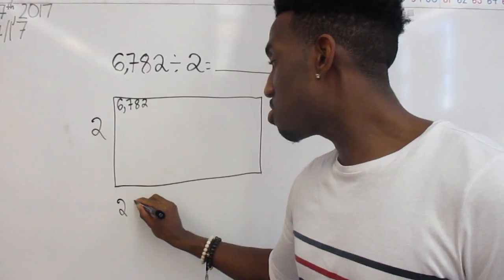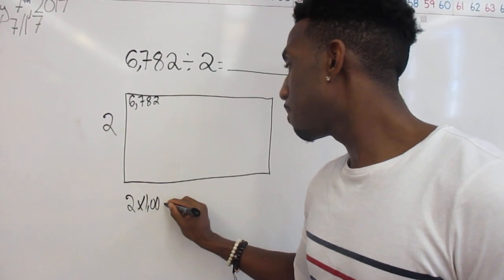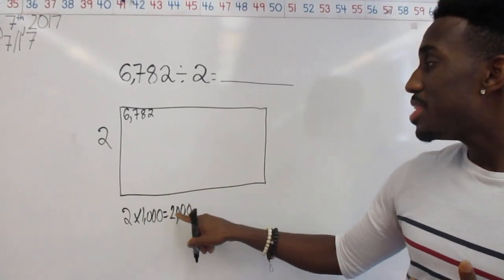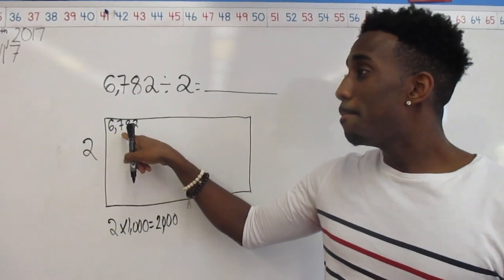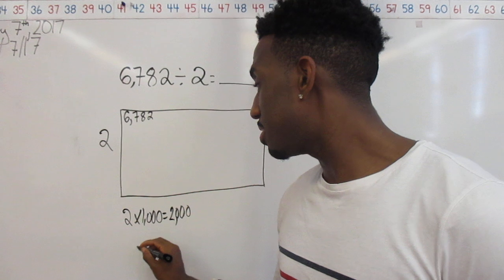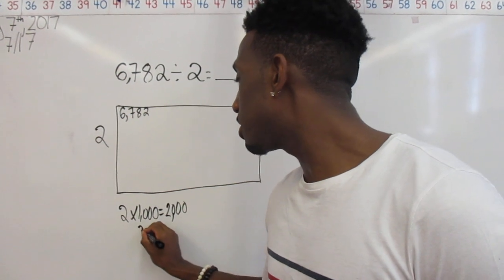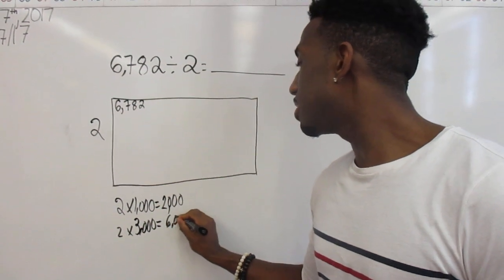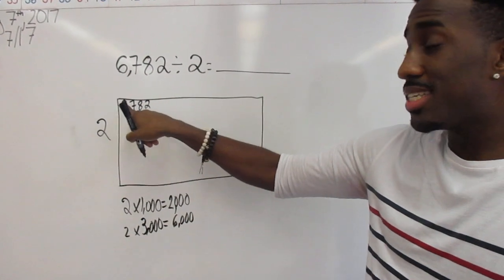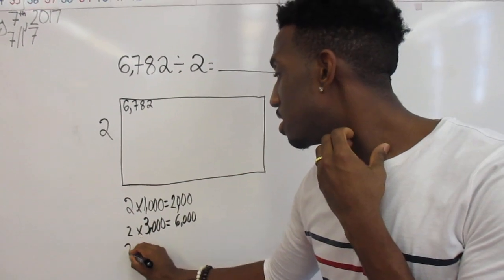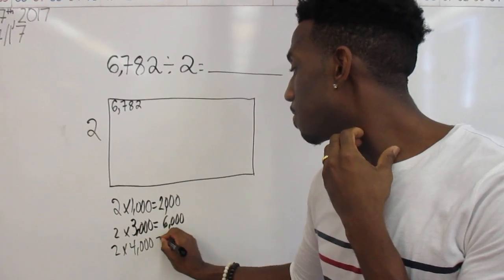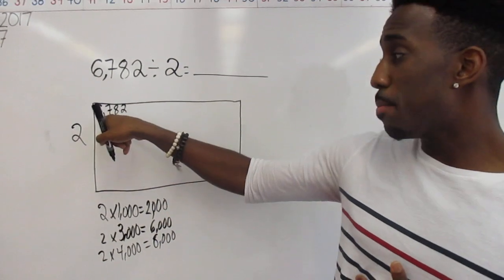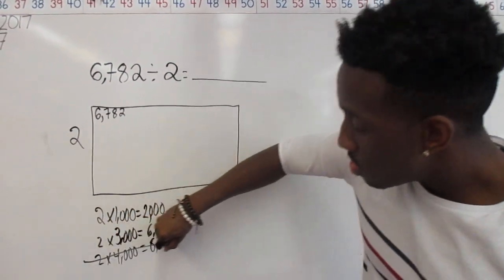I'm going to start with the smallest thousand, which is just 1,000. 2 times 1,000 is 2,000. Now 2,000 is close to 6,000 but I know I can get even closer, so let me try another thousand. Let's try 3,000. 3,000 times 2 gives me 6,000 — I'm just about there. Let me try 4,000 to see if I can get even closer. 4,000 times 2 is 8,000, and that's too big — it passed 6,782 so I can't use that.